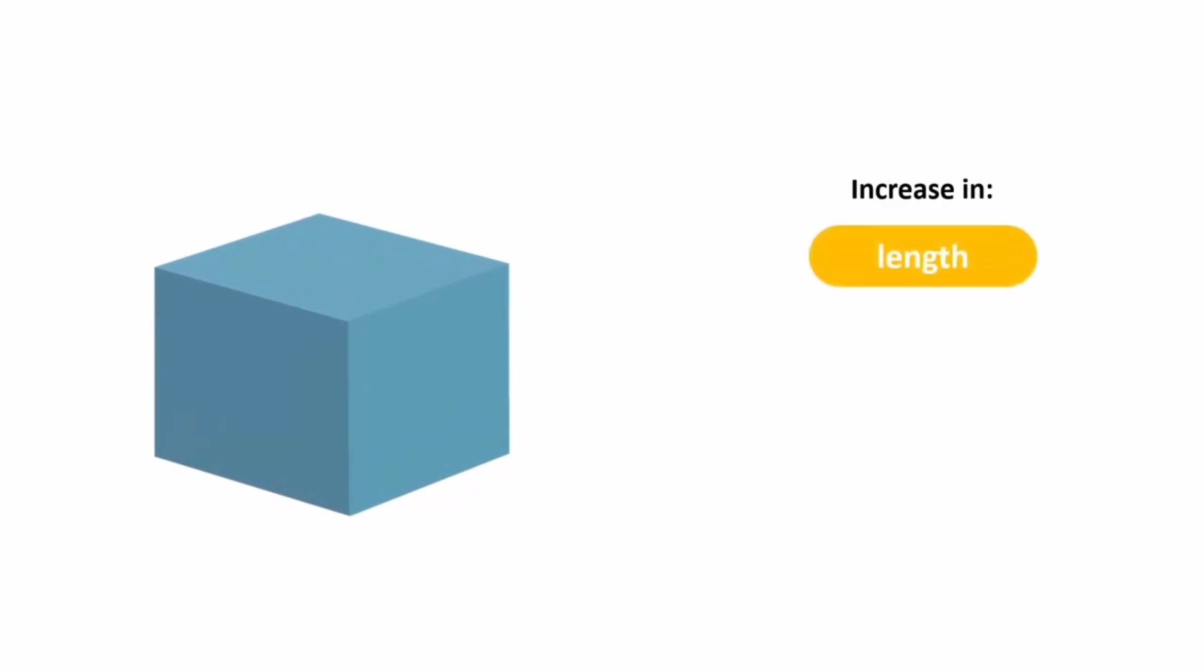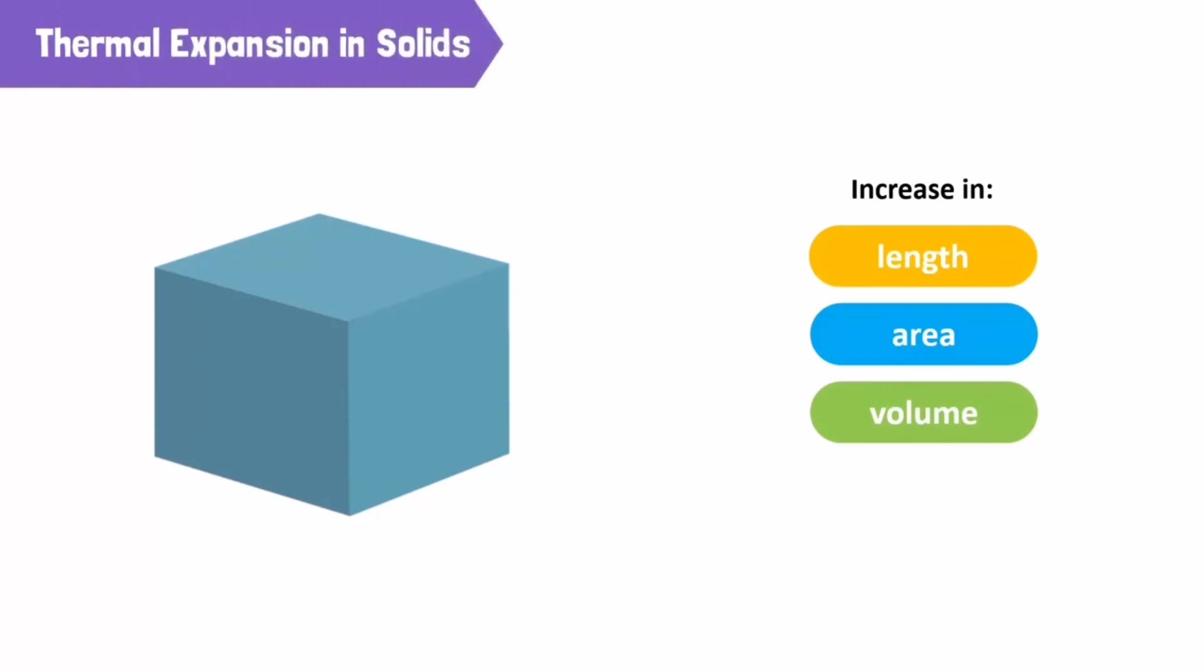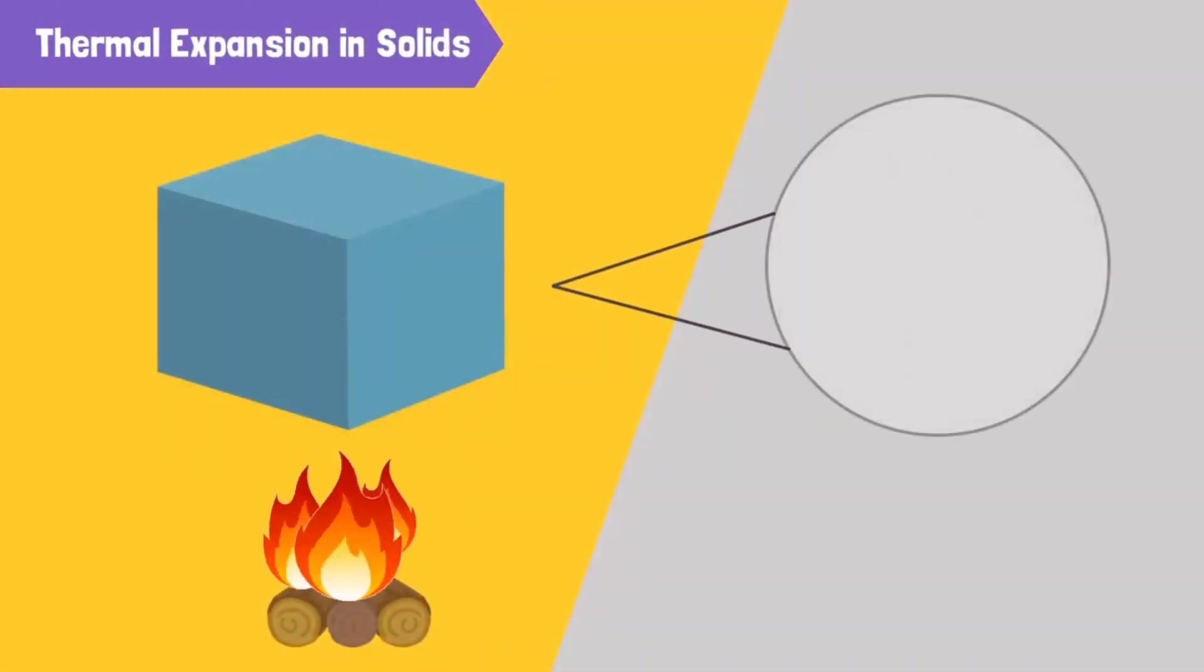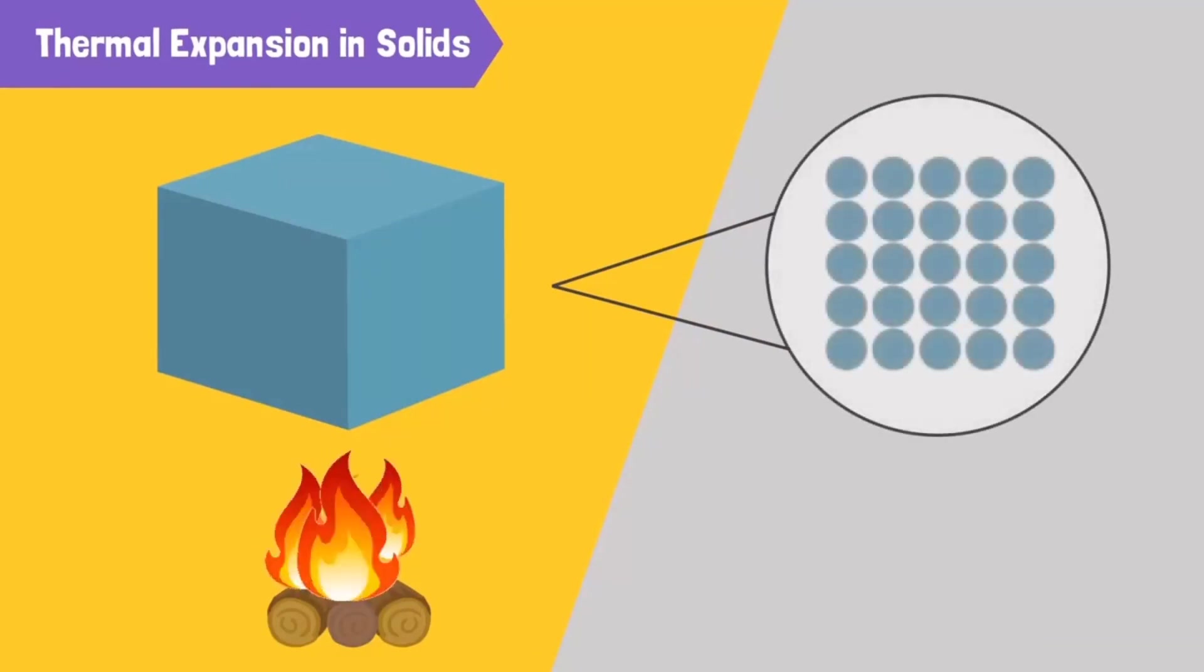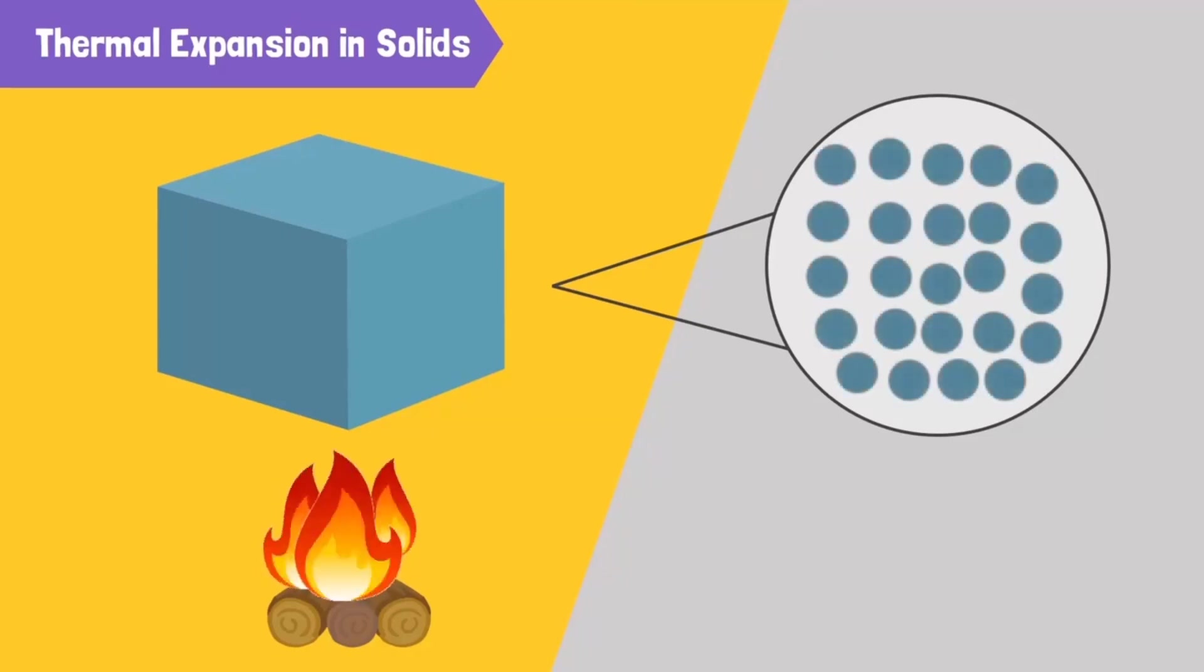Let's consider solids. When a solid is heated, it expands in size and shape, resulting in an increase in length, area or volume of the solid. This is known as thermal expansion of solids. When a solid is heated, the molecules that make up the solid begin to vibrate. This takes up more space and the solid matter expands.